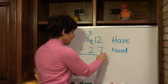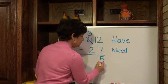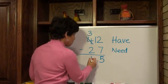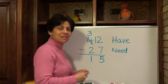So now let's see if I have enough. Twelve take away seven is five. That worked. Three take away two is one. That worked. And my answer is fifteen.